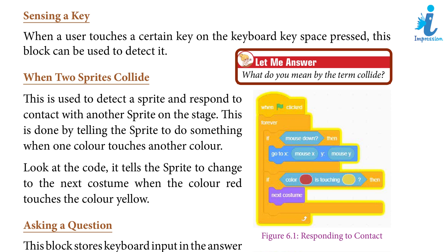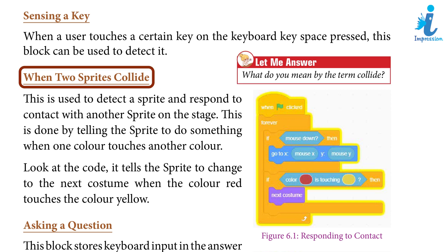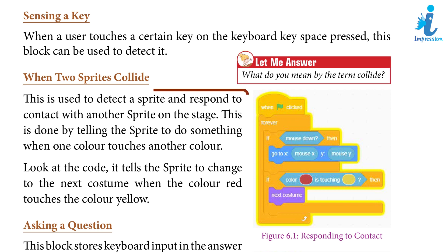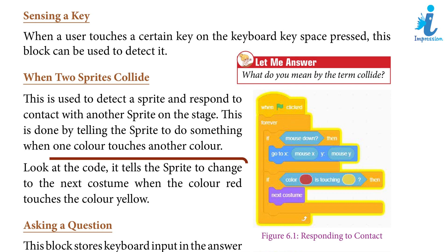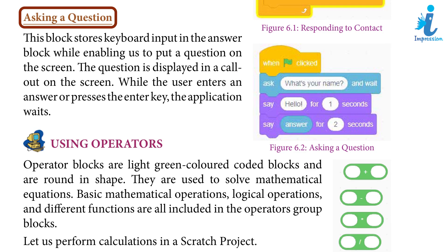Collision detection: When two sprites collide, this block is used to detect a sprite and respond to contact when another sprite is on the stage. This is done by telling the sprite to do something when one color touches another color. For example, the code tells the sprite to change to the next costume when the color red touches the color yellow.